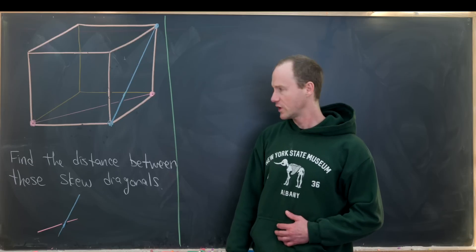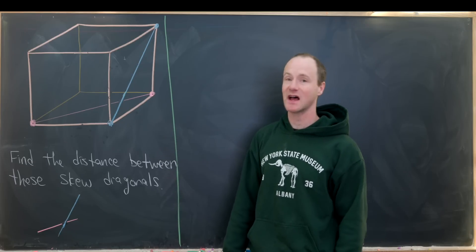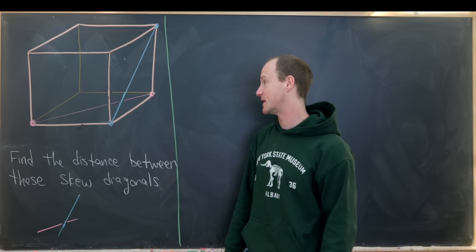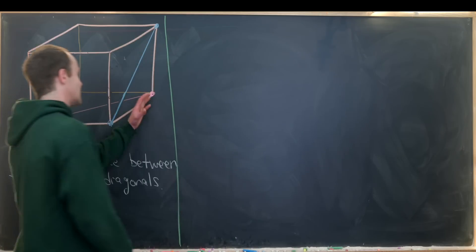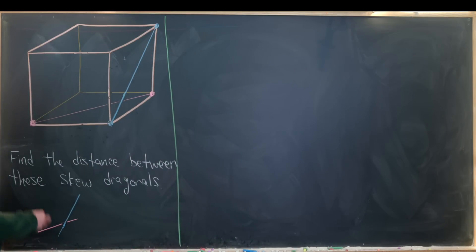In order to do that I'm going to put this inside a three-dimensional space R3. So that means I'm going to assign coordinates to all of these vertices. I'll put the origin right here, so that'll be 0, 0, 0.